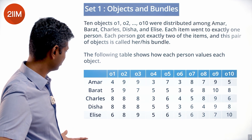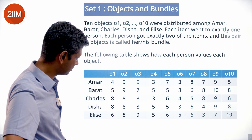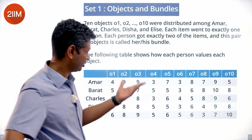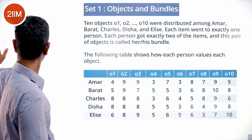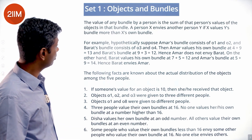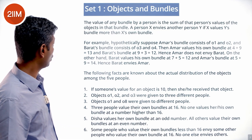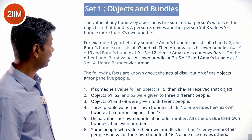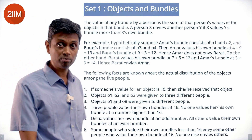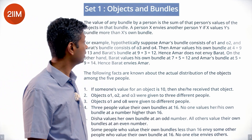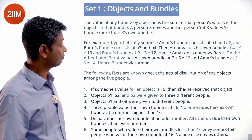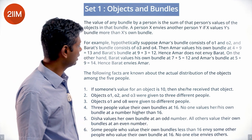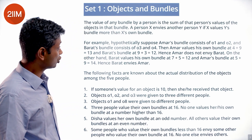We need to read more before we draw any conclusion. The value of any bundle by a person is the sum of that person's values of the objects in that bundle. A person X envies another person Y if X values Y's bundle more than X's own bundle.